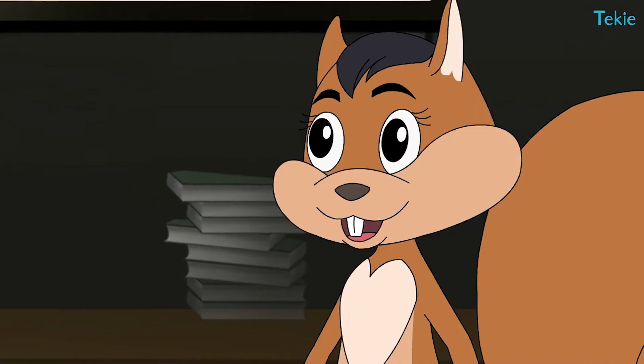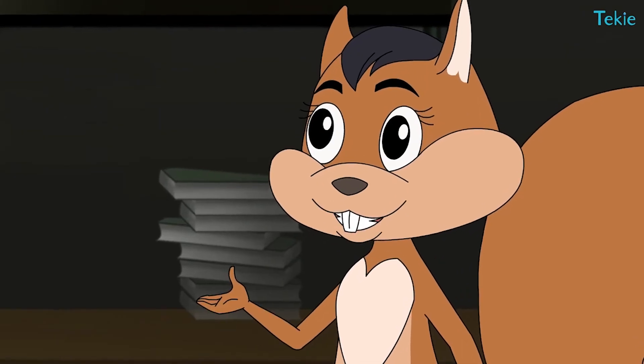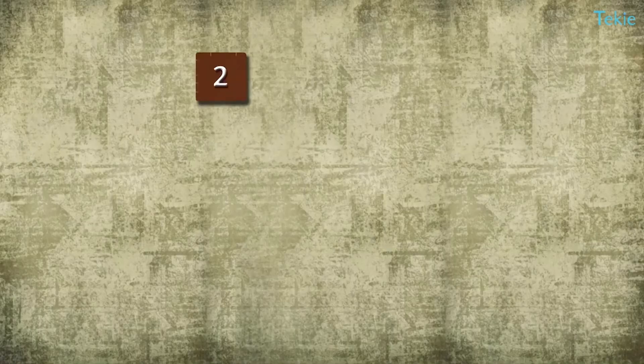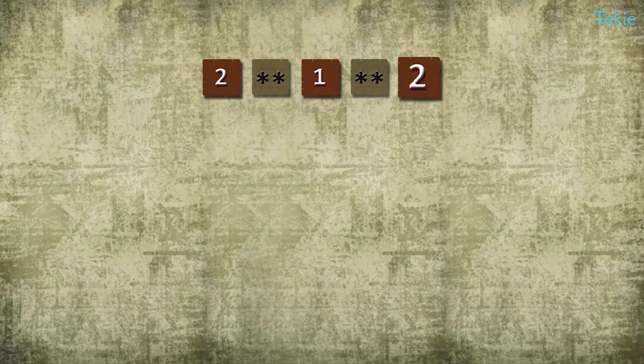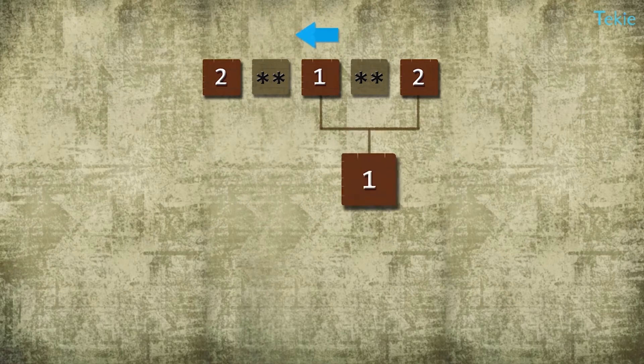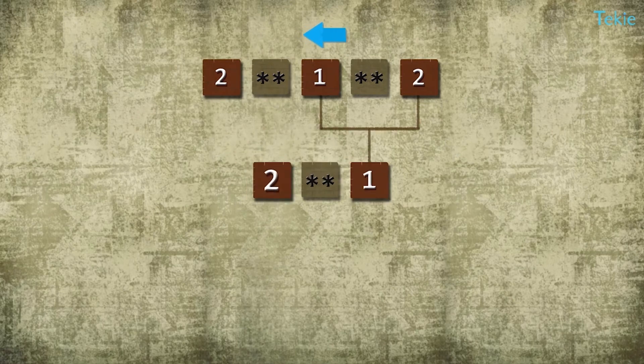For exponents, you go from right to left. So moving from the right first, we solve one to the power two to get one, then we solve two to the power one to get two.